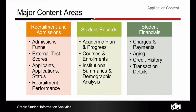The recruitment and admissions content area provides ways to monitor and measure the admissions funnel, which essentially takes you from recruitment to application to acceptance to enrollment. The efficiency of this entire process can be reported using several KPIs, which measure the efficiency of each step in this process.